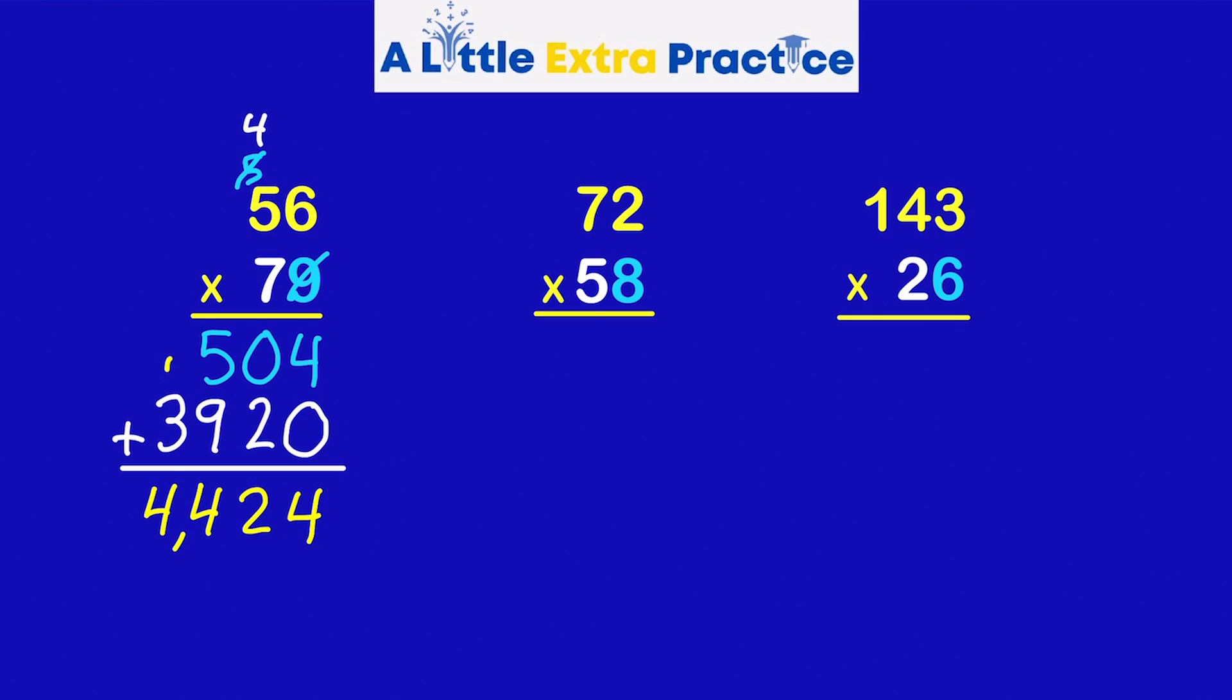So the product is 4,424. 72 times 58. My focus is on the 8 or the ones place. 8 times 2 is 16. Carry the 1. 8 times 7 is 56. Plus 1, 57.